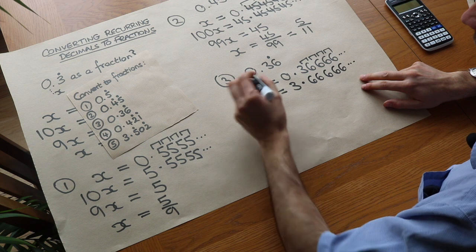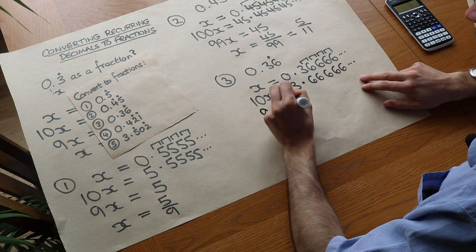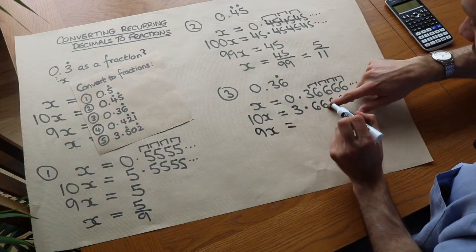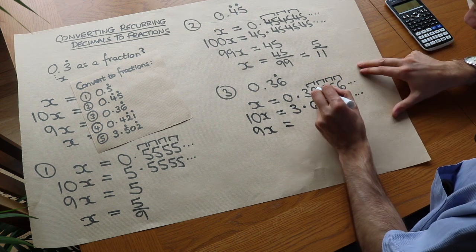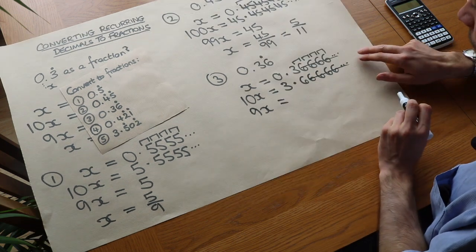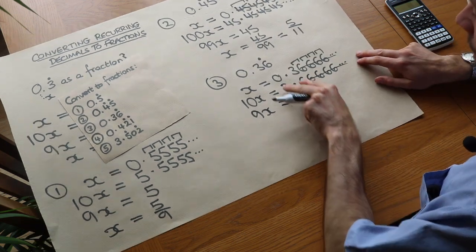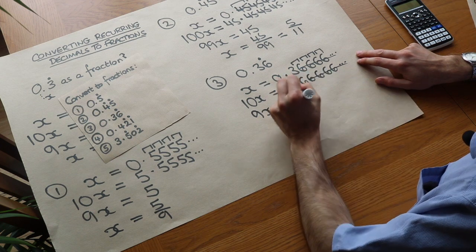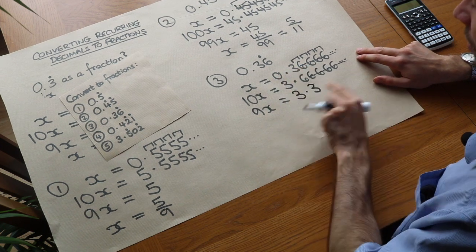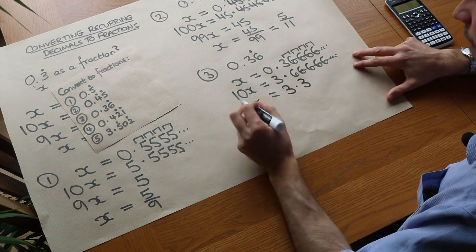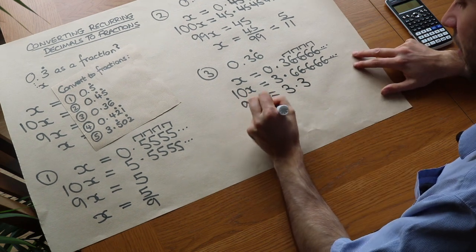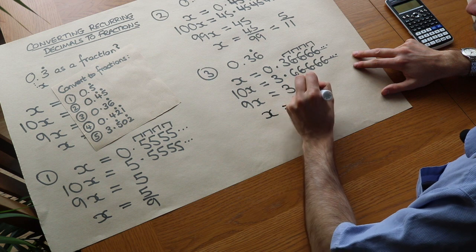Now when we subtract this time, well 10x minus x is 9x. But these 6 are the same. So 6 minus 6 is 0. So they're going to wipe each other out. But now we've got 3.6 minus 0.3 which is 3.3. So we're left with something after the decimal place. But that's okay. We can deal with that.